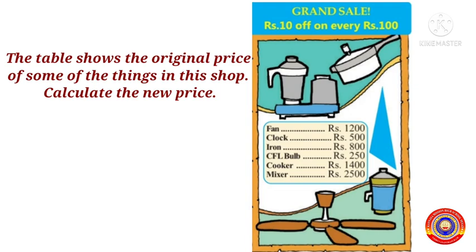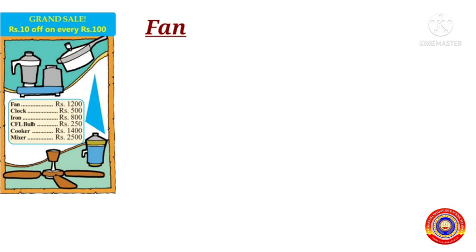10 rupees off means there is a reduction of 10 rupees for every 100 rupees. For computing the reduction in price, we have to first find out how many hundreds are there in the original price, and then multiply it by 10. Let's do it. The first item is the fan.